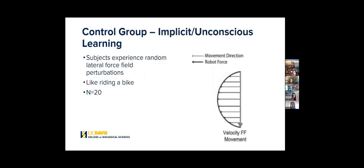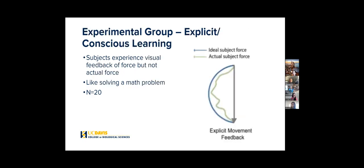Our control group would be implicit, so unconscious learning, and they will experience an actual force. Whereas our experimental group, which does the learning consciously, will actually see a visual form of feedback, which will be represented as a blue line representing the force. So they would have to trace it instead of feeling the force.